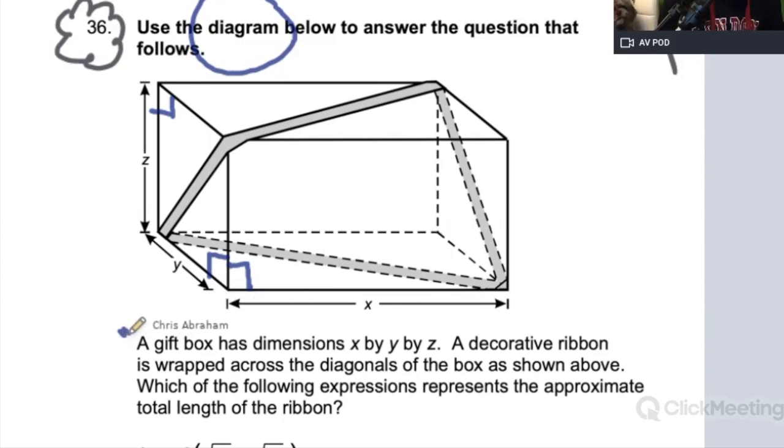Let's go a little further. A gift box. Oh, we're dealing with a gift box. I can see that gift box. And it has dimensions of X by Y by Z. And then it says a decorative ribbon is wrapped across the diagonals. I like that word diagonals of the box as shown above, which of the following expressions represents the approximate length of the ribbons. So that diagonal word is really important.